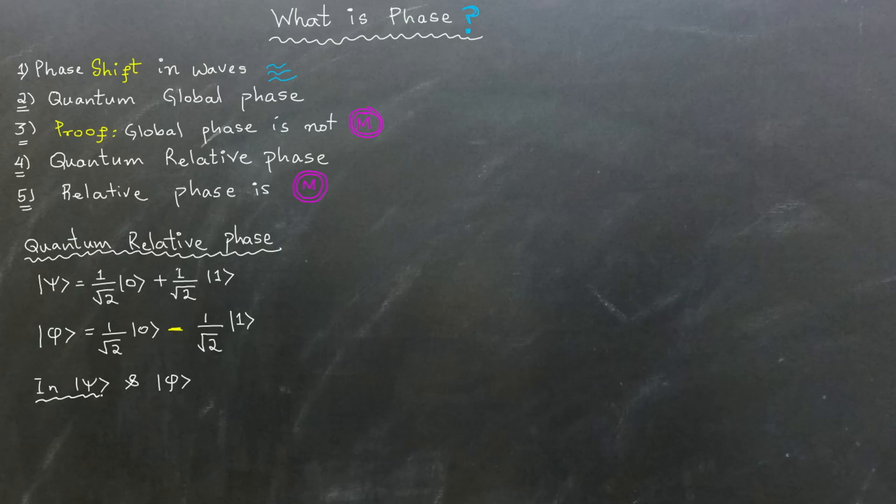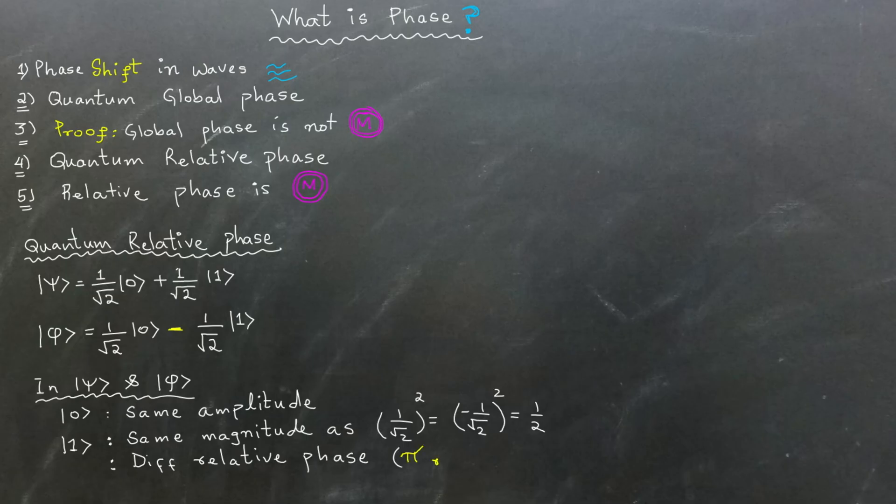Note that in both registers, ket 0 has the same amplitude. In contrast, ket 1 has the same amplitude, since square of 1 over square root of 2 and square of minus 1 over square root of 2 are the same. However, they both have different phases.